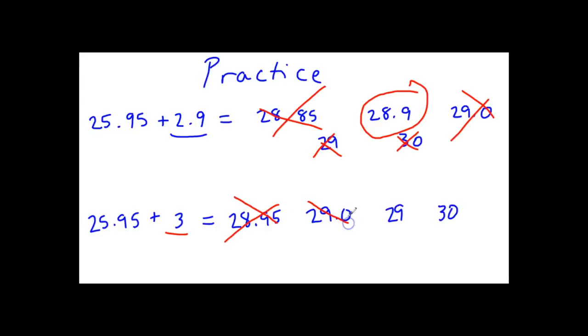That eliminates 28.95, eliminates 29.0, and you're left with 29 and 30. Using good rounding rules, your answer should be 29.